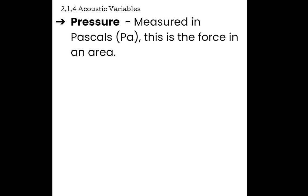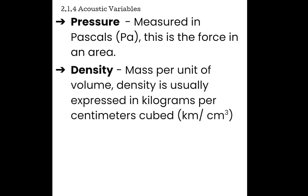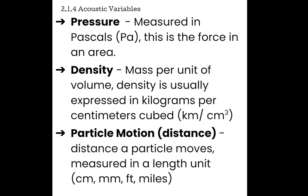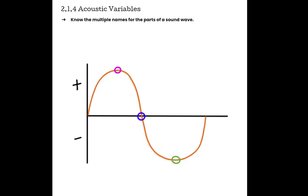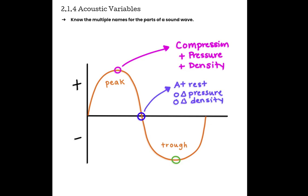To identify a sound wave, there must be a cyclical change in at least one of the acoustic variables. The acoustic variables include pressure, which is measured in pascals, and this is the force in an area, density, which is mass per unit of volume, and density is usually expressed in kilograms per centimeters cubed, and particle motion or distance. And this is the distance that a particle moves as it interacts with sound energy. This is usually measured in a length unit, like centimeters, millimeters, feet, or miles. We often use sinusoidal waves, like this one, to represent a sound wave. At the top, we have peaks, and in the bottoms, we have troughs. The peaks are also known as compressions, and this is where the pressure is high and the density is high. As the line crosses over the zero line, this is the particles at rest, so there's no change in pressure, no change in density. They are at their neutral position. And then at the bottom, we have rarefraction, and this is where there's going to be less pressure and less density.